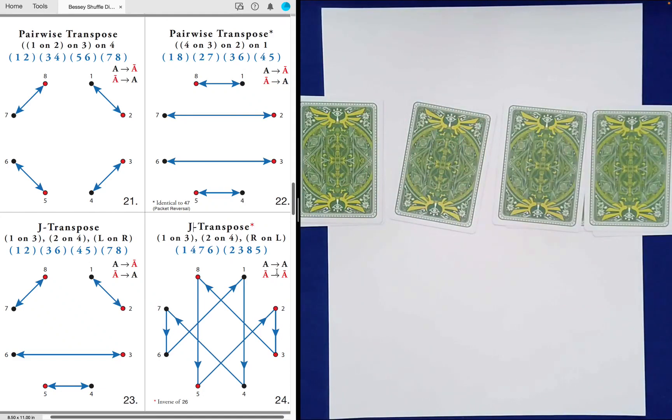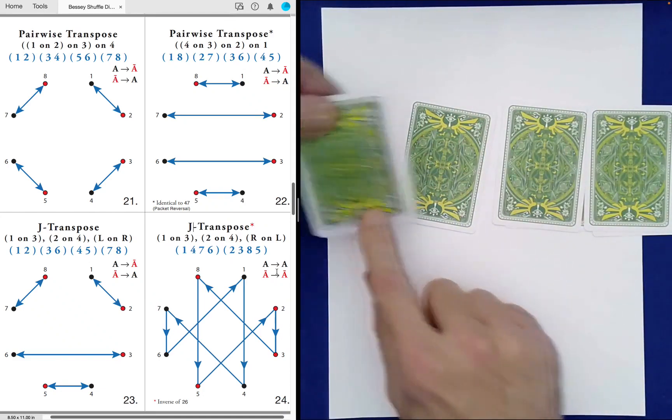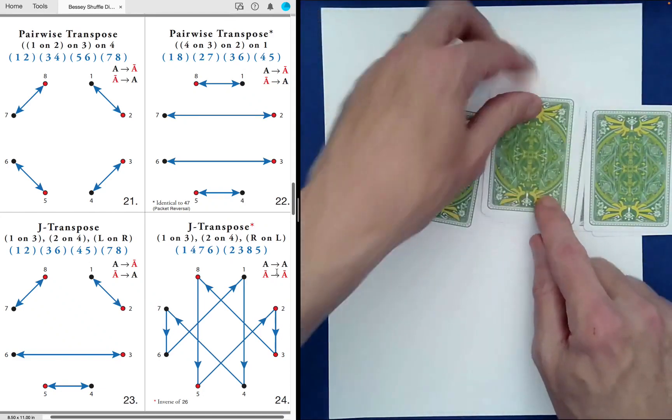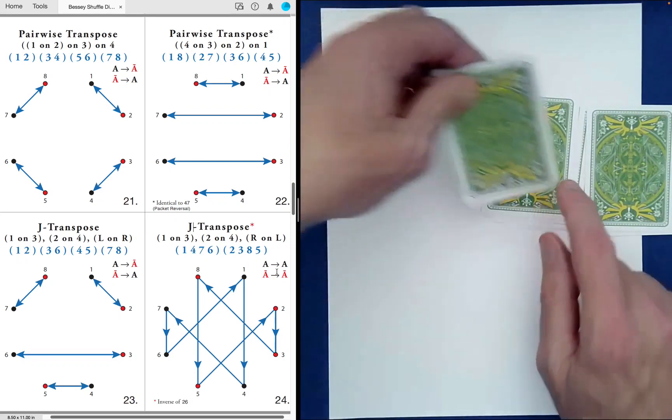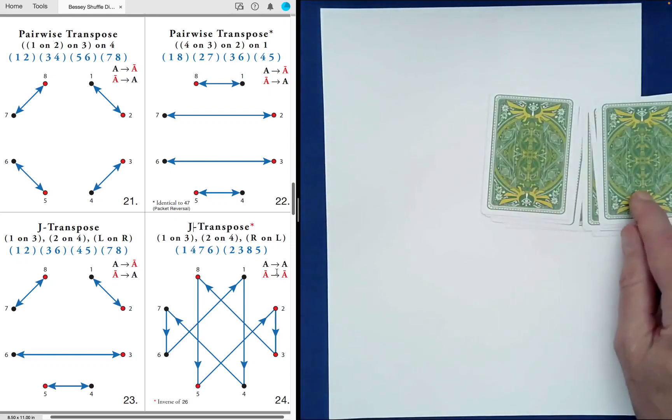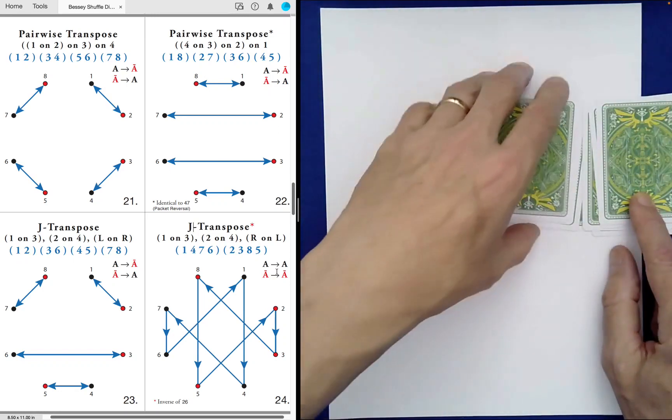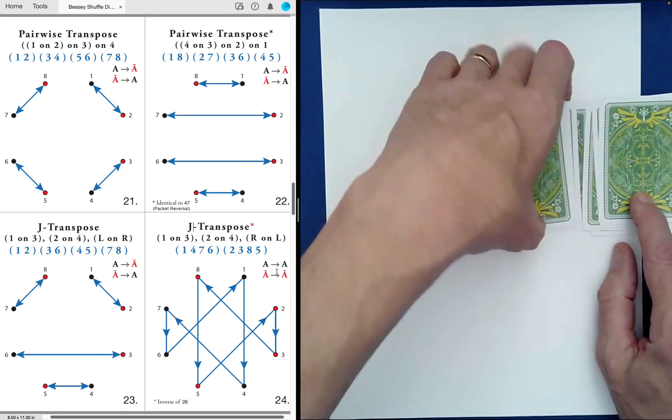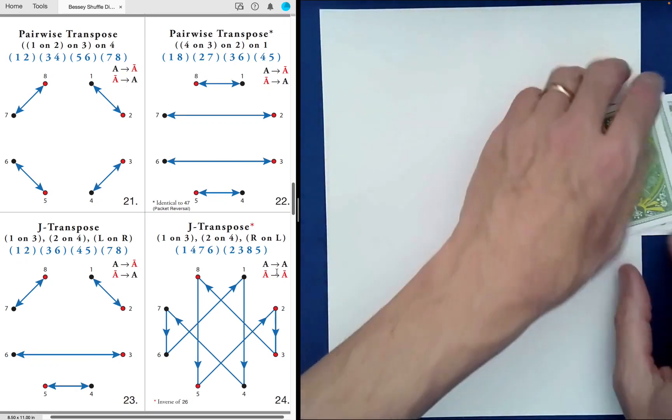And then here, it's also the leapfrog. So, one goes over two on to three, two goes over this neighbor here on to four. Now, this time, we're stacking left on right. If you look at shuffle 23, we're stacking left on right.